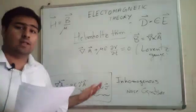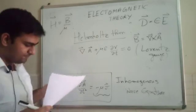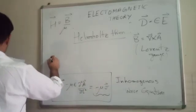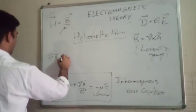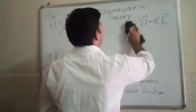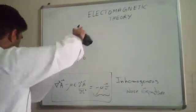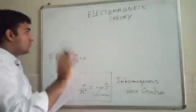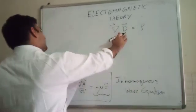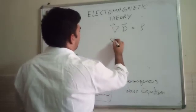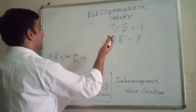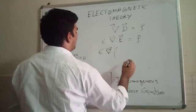Similarly, we now derive the equation for the scalar potential V. We use the Lorentz gauge condition, divergence of A plus mu epsilon dV/dt equals zero, together with the Gauss law of electrostatics: divergence of D equals rho. Since D equals epsilon E, and E equals minus gradient of V minus dA/dt, we take the divergence to obtain: epsilon times divergence of (minus gradient of V minus dA/dt) equals rho.